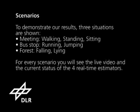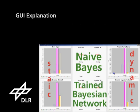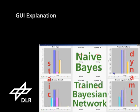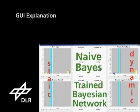For every scenario, you will see the live video and the current status of the four real-time estimators. The estimators in the top row use a naive Bayes approach. For the two algorithms below, a Bayesian network was learnt using the labelled training dataset.